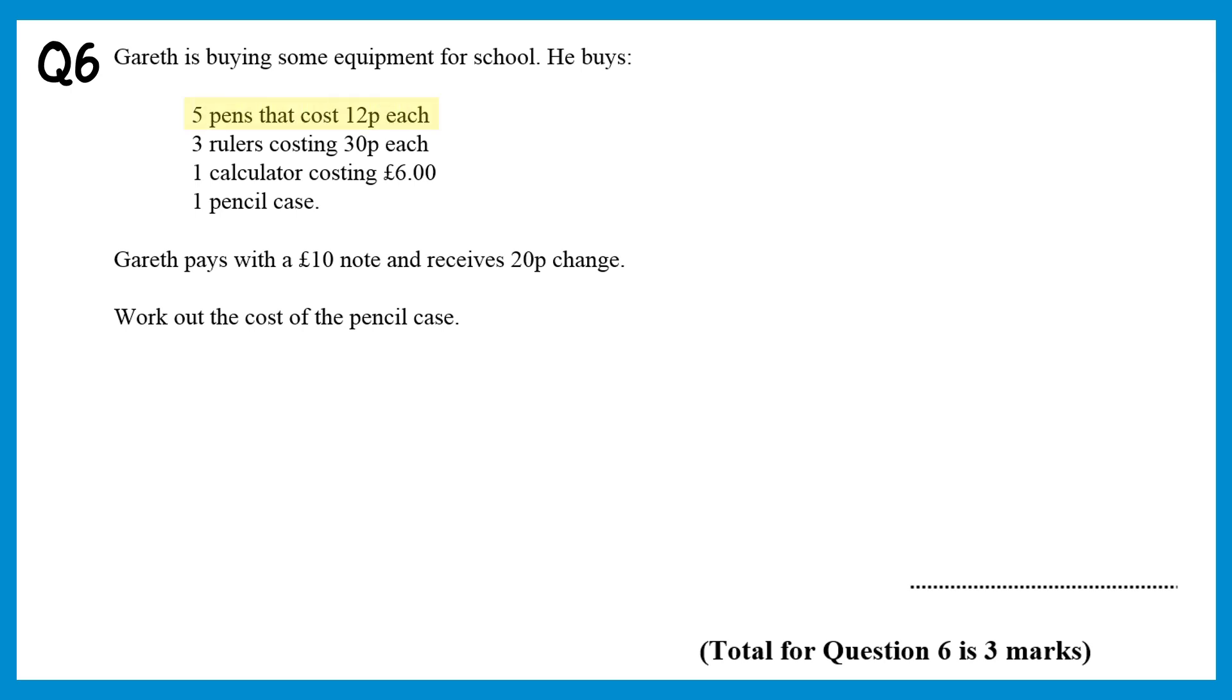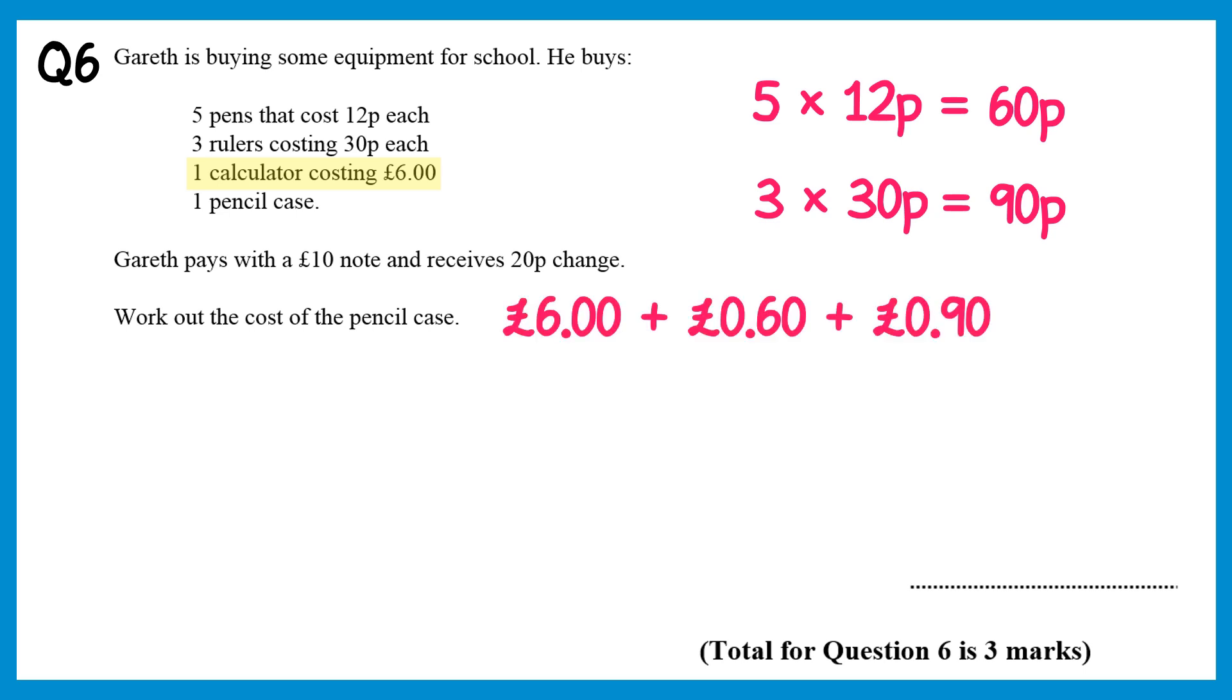There are 5 pens that cost 12 pence each, so if we do 5 times 12 pence, we get 60 pence. There are also 3 rulers at 30 pence each, 3 times 30 pence is 90 pence. We also have 1 calculator costing 6 pounds, so if we add 6 pounds and the 60p and the 90p, you'll get a total cost of 7 pounds 50. This is for all of the items apart from the pencil case.